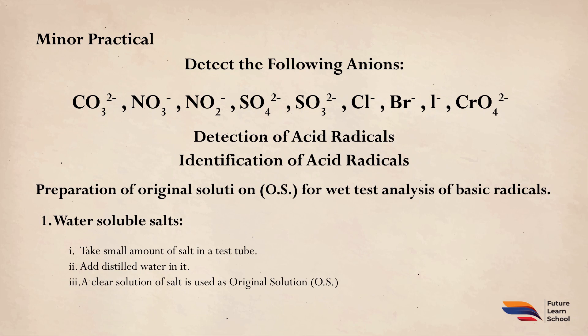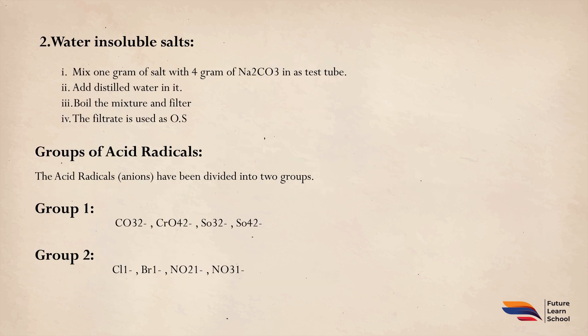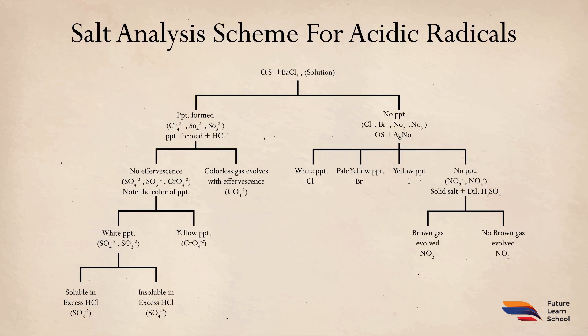Assalamu Alaikum, my name is Tana Malik, your FLS teacher. Today we are going to discuss the practicals of second year chemistry. We're going to start with salt analysis. As we all know, a salt is made up of two types of ions: one is the cation, which is the basic radical, and the other is the anion, which is the acidic radical. Today we will discuss the salt analysis scheme of acidic radicals.